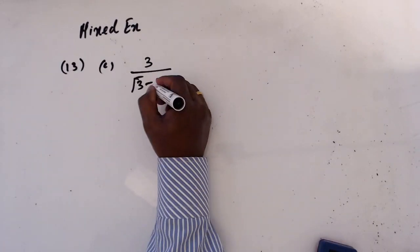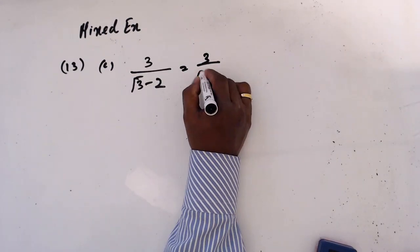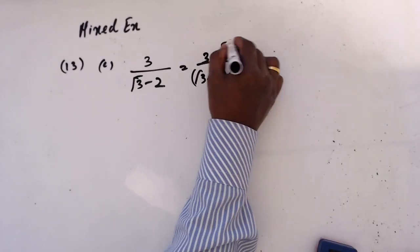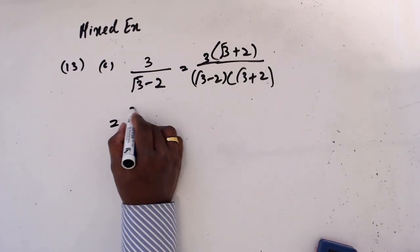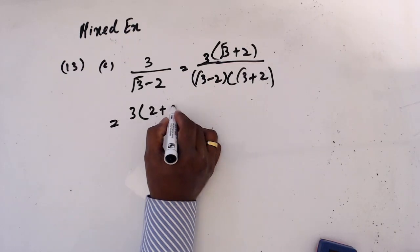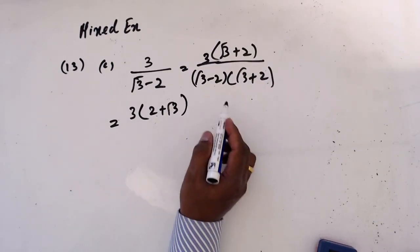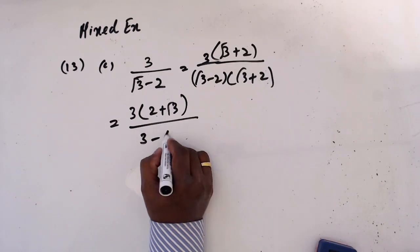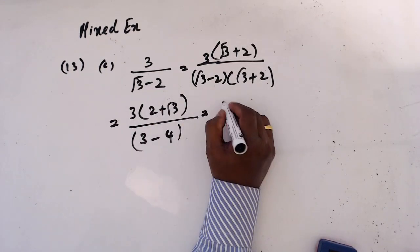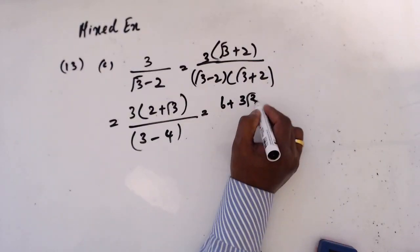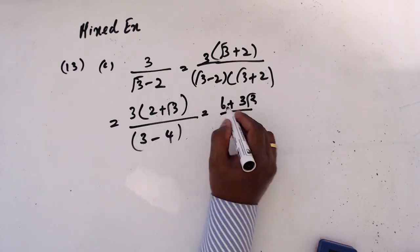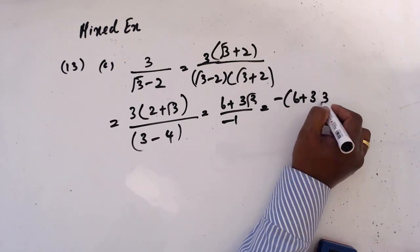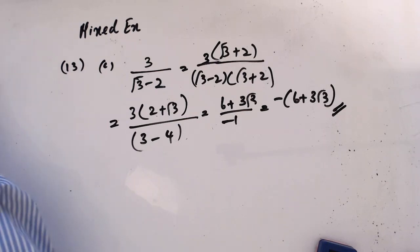Part c: multiply by the conjugate — 3 times (2 + √3) over (2 + √3). This gives 6 + 3√3 over (3 times 2 is 6, plus 3 minus 1). So basically it becomes minus 6 + 3√3.